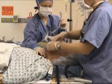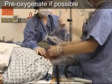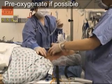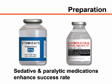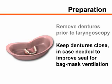If the clinical situation allows, pre-oxygenate the patient with a non-rebreather mask or a bag valve mask with 100% oxygen for at least 3 minutes prior to the intubation. The use of sedative and paralytic medications greatly enhances the success rate of endotracheal intubation; however, their use is beyond the scope of this video. Remove the patient's upper and lower dentures, if present, immediately prior to laryngoscopy. Keep the dentures close at hand so that they may be rapidly reinserted to improve the mask seal if bag mask ventilation is required.